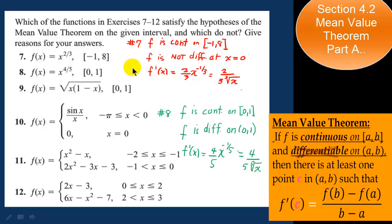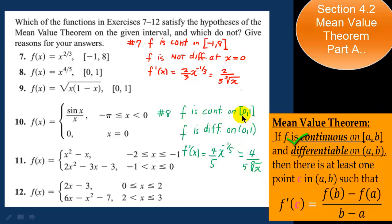For number 8, f of x equals x to the 4 fifths. Differentiating gives 4 over 5 times x to the negative 1 fifth, or 4 over 5 times the fifth root of x in the denominator. This means it's not differentiable at x equal to 0. However, since the function is continuous on the closed interval 0 to 1 and is differentiable on the open interior 0 to 1, number 8 does satisfy the hypotheses of the mean value theorem.